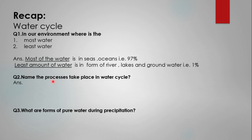Now, what processes take place in the water cycle? Name the processes that take place during the water cycle. These are evaporation, condensation, and precipitation.